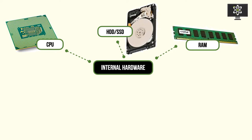RAM is a type of memory different from HDDs and SSDs - whatever's stored on RAM is lost once the power goes off. RAM is extremely powerful as it's used for caching: your CPU requires instructions to execute, and data access from internal storage to the CPU is not quick enough for modern use. As a result, we need a quick-access memory location on a temporary basis. That's where random access memory comes in, and it's extremely useful for caching. Most applications, especially games, are very dependent on RAM.